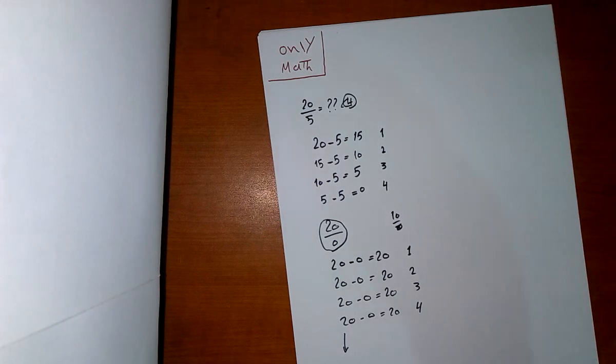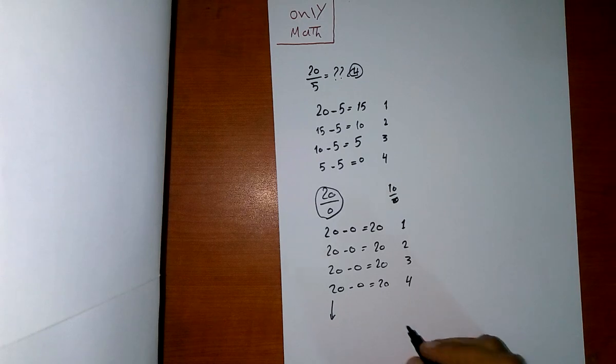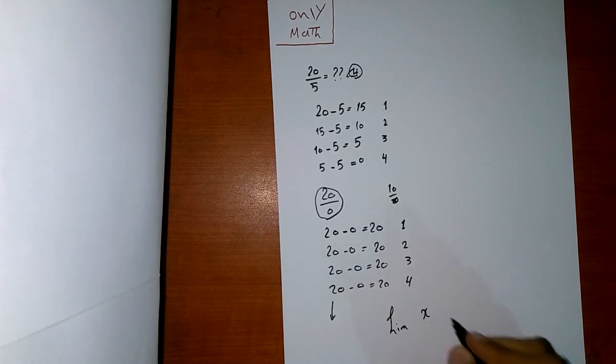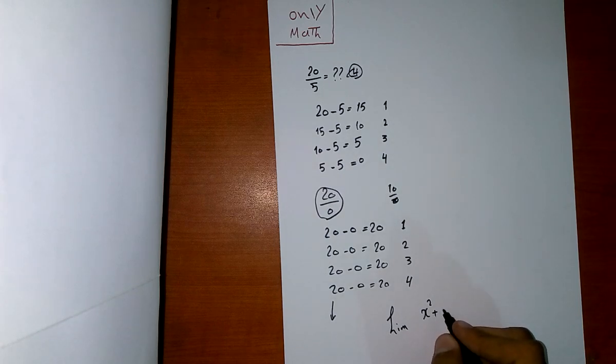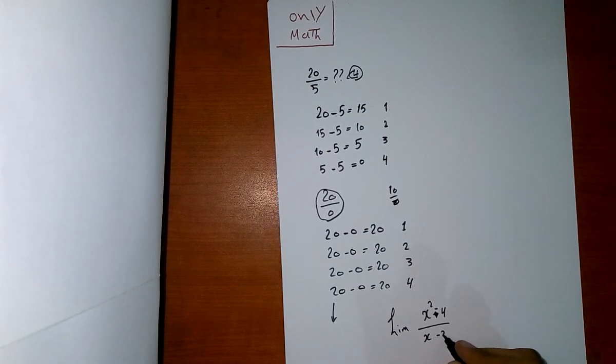the difference between limits. For example, x squared plus 4 or x squared minus 4 divided by x minus 2. What is the difference? When x approaches 2, it will be 0 over 0, and the